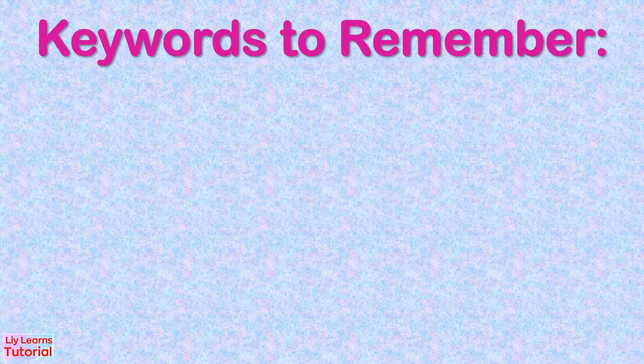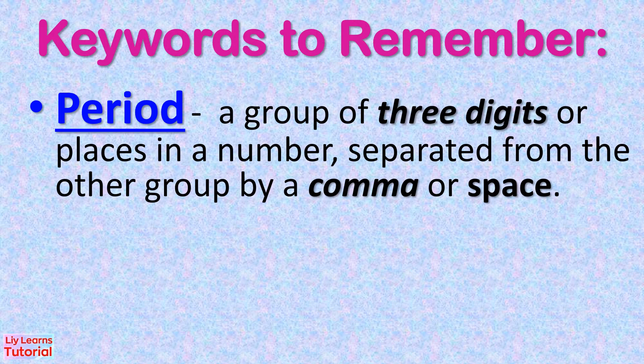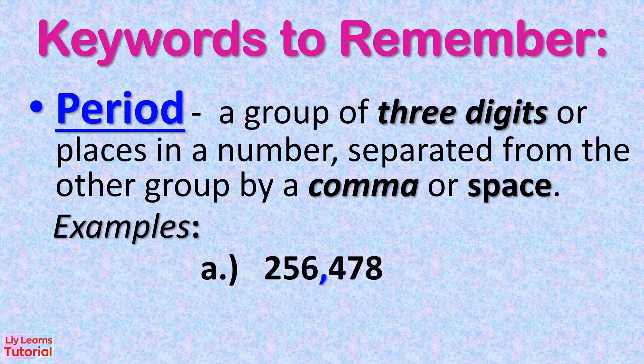Keywords to remember. Period: a group of three digits or places in a number, separated from the other group by a comma or space. Example A is separated by a comma. Example D is separated by a space.